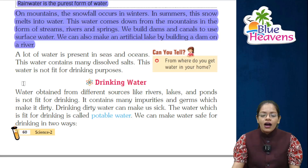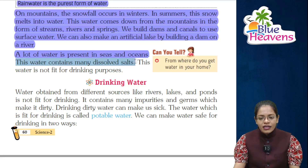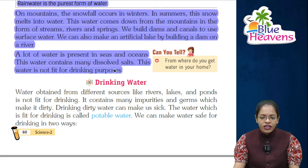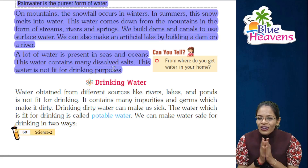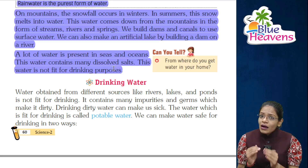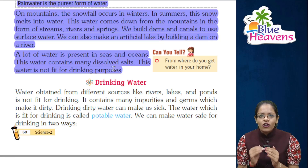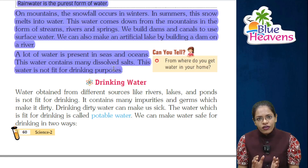A lot of water is present in seas and oceans. This water contains many dissolved salts. This water is not fit for drinking purposes. Children, the water found in seas and oceans cannot be drunk or used, because it is salty — saline water. It is not used for drinking purposes.